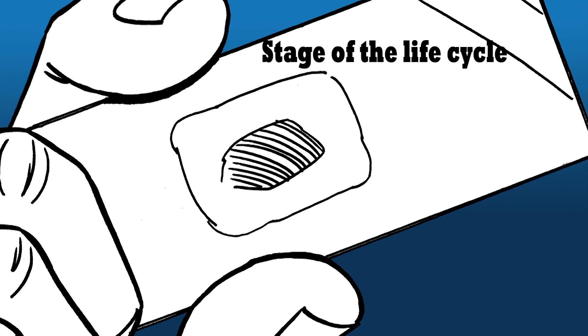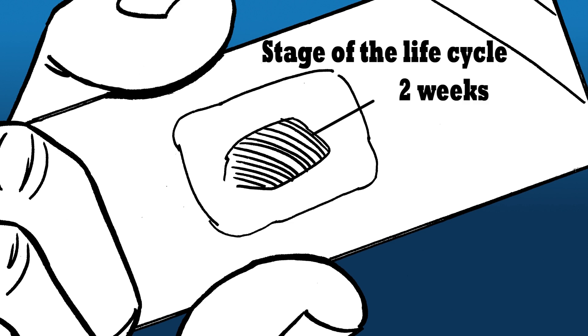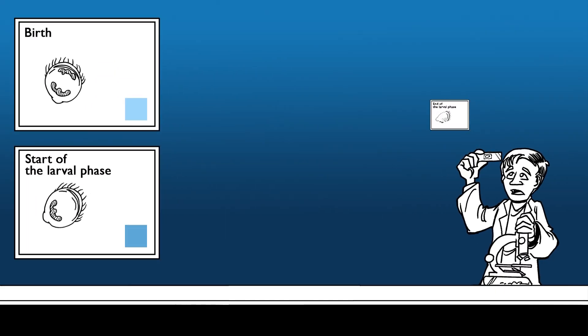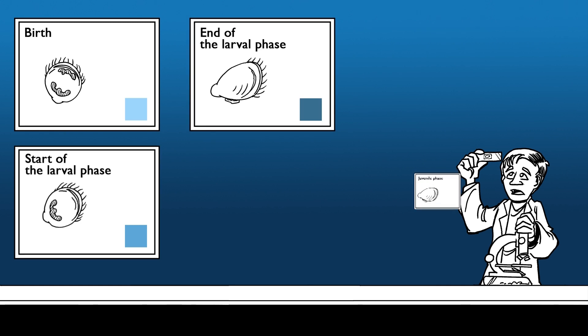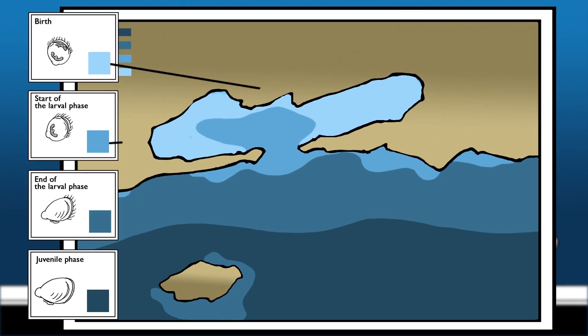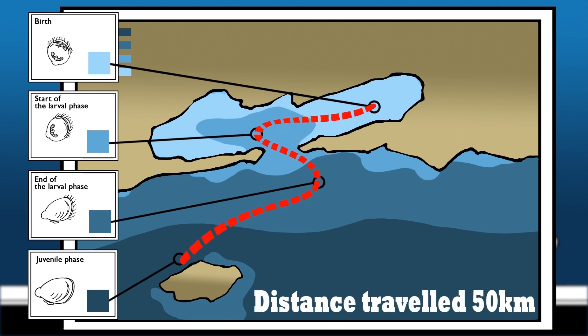Like the rings of a tree, we analyze the chemical composition of microsamples from the center to the exterior. These correspond to different stages of life: birth, the start and end of the larval period, and the juvenile period at the time of sampling. We can therefore obtain the position of individuals through time by comparing them to data of the environmental composition of the ocean and retrace their migrations.